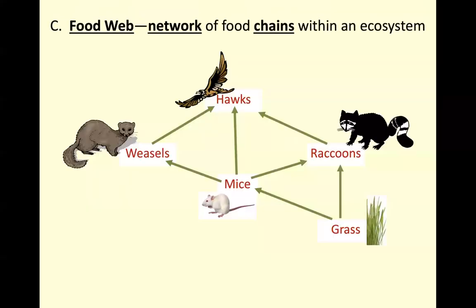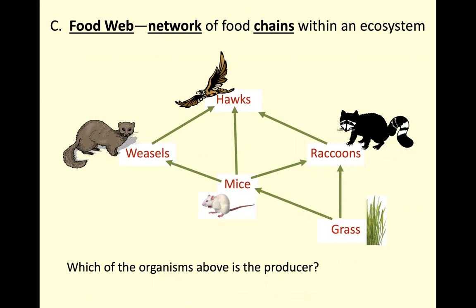We can construct a food web, which displays a network of food chains that exists within an ecosystem. We can identify the producers and consumers within this food web, with arrows indicating the directional flow of energy. In this case, our producers are grass.